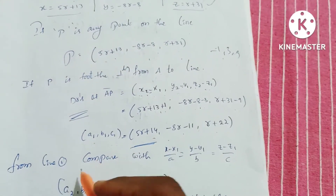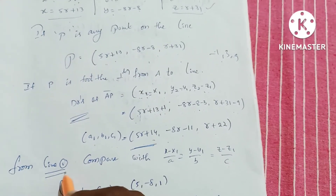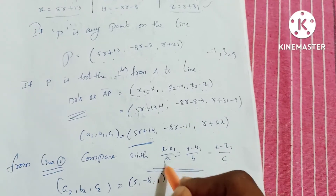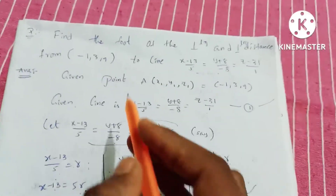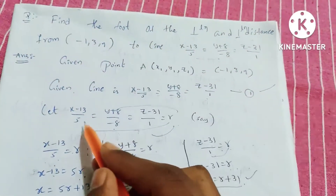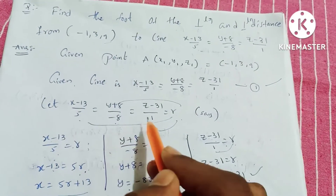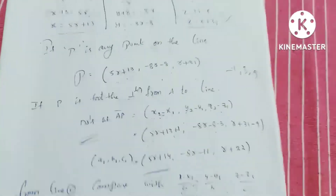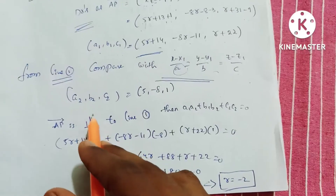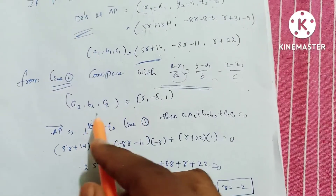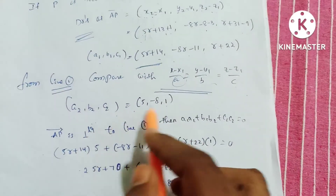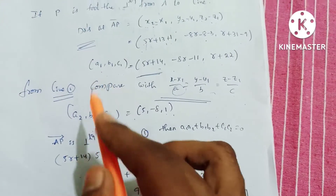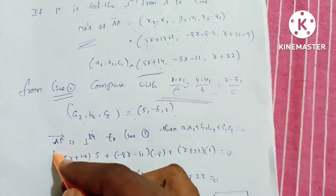From the line equation, the direction ratios a2, b2, c2 are 5, minus 8, and 1 respectively. Since AP is perpendicular to the line, we use the condition a1·a2 plus b1·b2 plus c1·c2 equals 0.